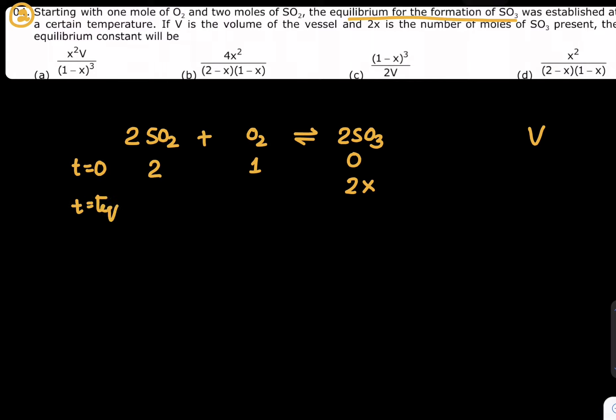This is 0 at t = 0 and this is t = equilibrium. This is 2x. How much is the loss of O₂? It should be 1 - x. Why? Because if x goes, this will form 2x. If 1 goes, this forms double. So the number I should mention here is 2 - 2x. These are the moles for equilibrium conditions.